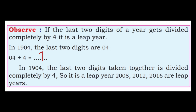2008, 2012, and 2016 are leap years. The last 2 digits — 08, 12, and 16 — are all completely divisible by 4, so they are leap years.